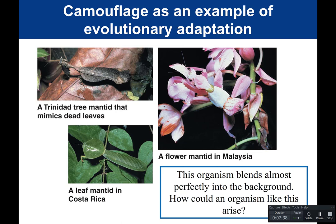Remember from molecular biology that the only way new alleles arise is through mutation — a random process. If a mutation happens to be beneficial and creates a protein useful to the organism, allowing it to survive and reproduce better, that trait will be passed on with higher frequency. Each type of mantid evolved in its own environment with adaptations suited for that environment. An adaptation favorable in one environment may not be favorable if the environment changes.